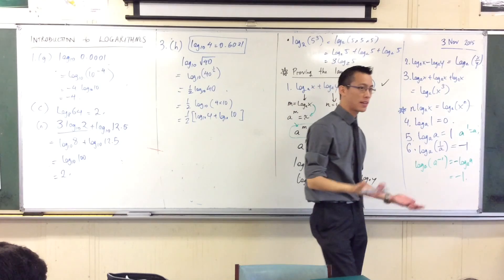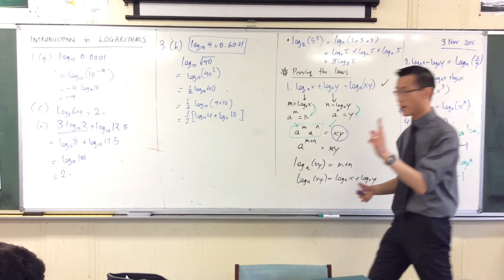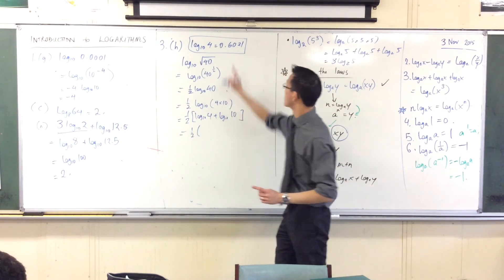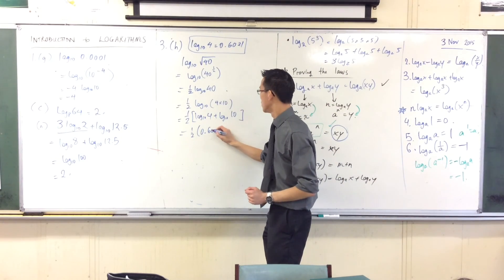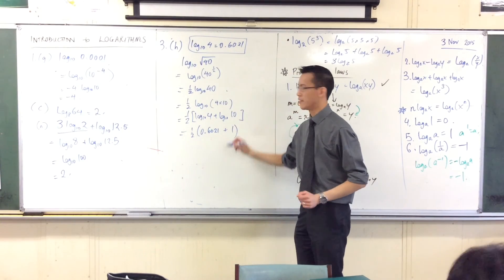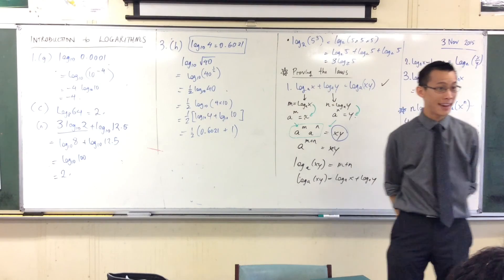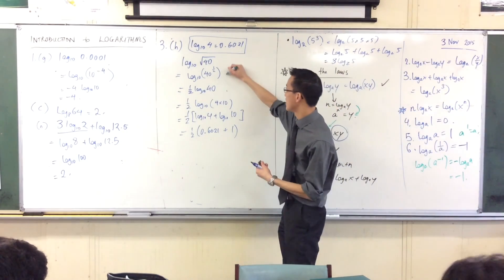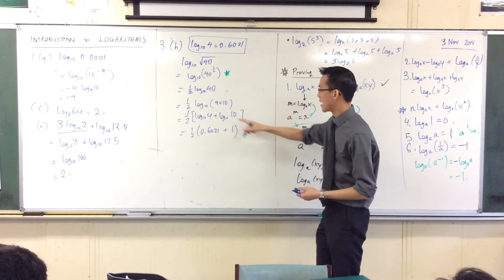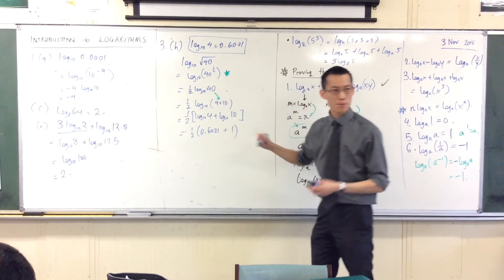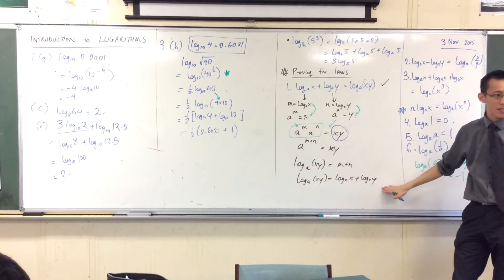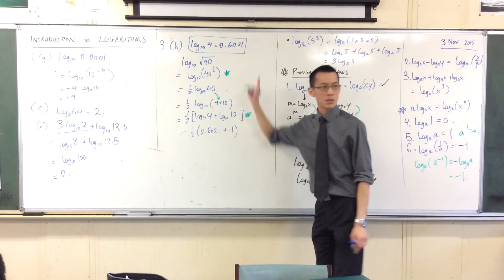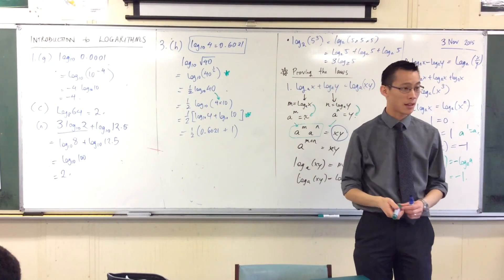And that's also good because log base 10 of 10 is just 1. So, I've got a half times that thing plus 1. And your calculator can do that for you. Can you see we had to do quite a few things there? We had to get things in index form. We had to see, oh, I should break this apart so I can use this law. Then I had to use it, and then I had to evaluate based on what I did.